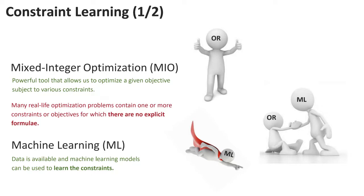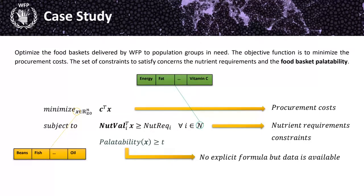Sometimes there are real-life optimization problems where functions — either the objective function or constraints — are not explicit, meaning we don't have a function for them and don't know how to describe them realistically. But when data is available, we can use machine learning models to learn the constraint or the objective function and embed it into the optimization model. From now on in the presentation, I will just talk about constraint learning, but it actually extends to the objective function as well.